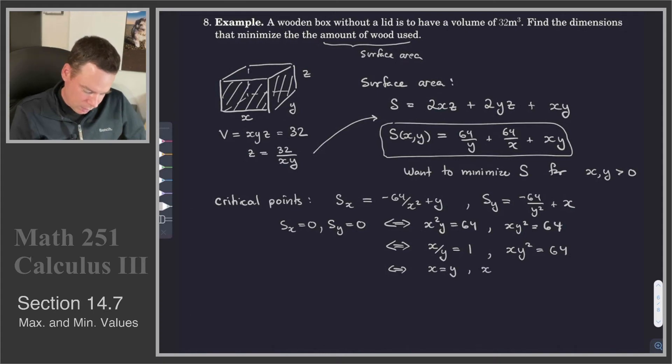And plugging that into the second equation, that gives me x cubed is equal to 64. Or in other words, x, y has to be 4, 4. So that's our critical point. Our critical point is x, y is 4, 4.